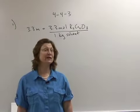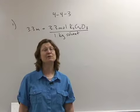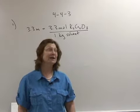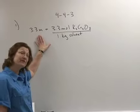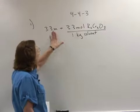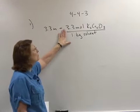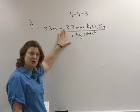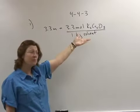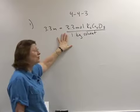In number one, we are given a concentration of 3.3 molal. The little m means molal, so the very first thing I do is write what it means: 3.3 moles of my solute, which in this case is potassium dichromate, for every one kilogram of solvent.